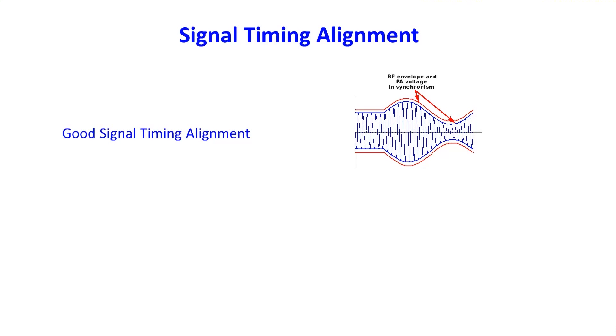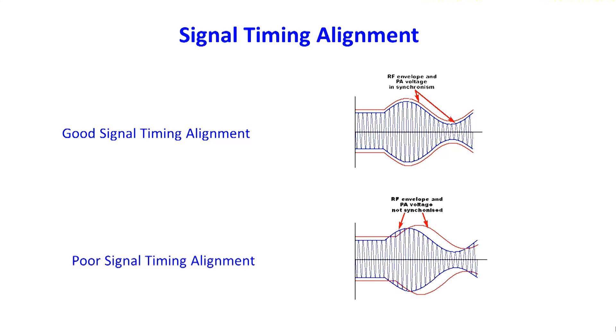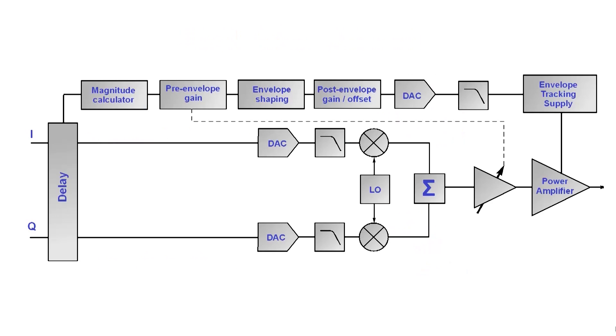Another key aspect of the performance of envelope tracking systems is the alignment between the control signal and the RF envelope. Good tracking alignment will mean that the control signal and the RF envelope are synchronised. Poor tracking will mean that the peak of the RF envelope will not occur at the same time as the supply voltage peaks. This occurs primarily as a result of delays in the filters in the two signal paths. To ensure that the two signals align properly, a delay balancer is introduced where the two signal paths are split. This is optimised to ensure the delays in each path match and the two signals are fully synchronised.